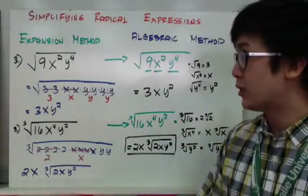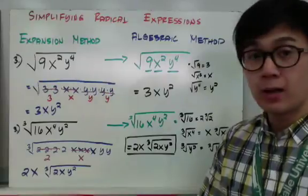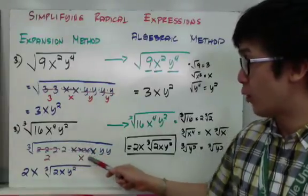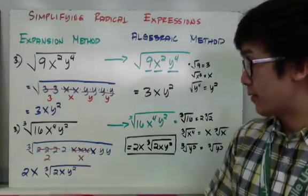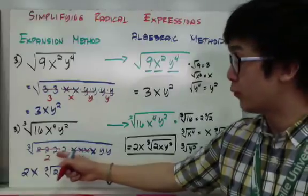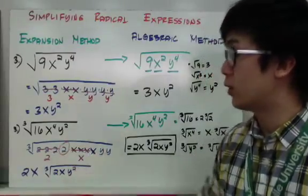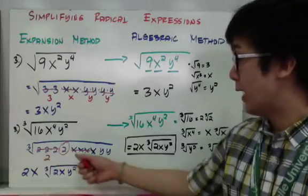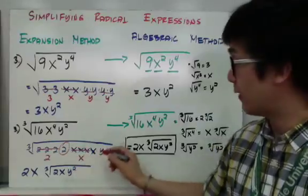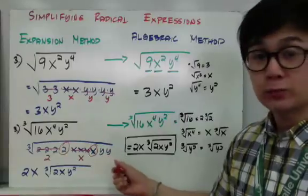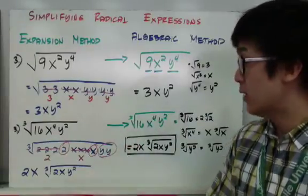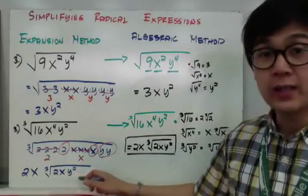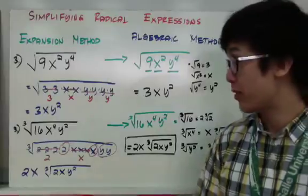For example 3, the cube root of 16x to the fourth y squared: 16 factors as 2×2×2×2, giving four 2's, four x's, and two y's. Grouping in sets of 3: I get one group of three 2's coming out, with one 2 left over. For x's, one group of three comes out with one x left over. The two y's cannot form a group of 3, so they stay inside. The simplest form is 2x times cubed root of 2xy squared.